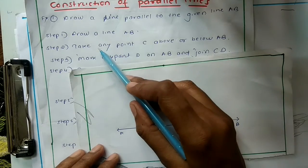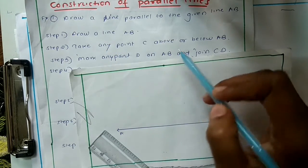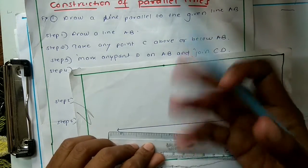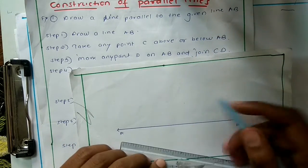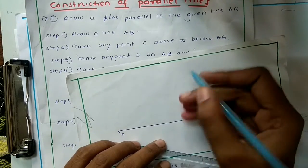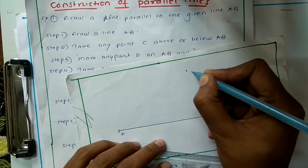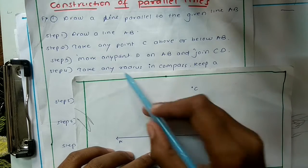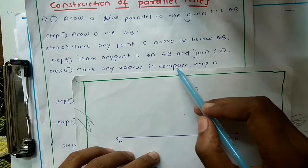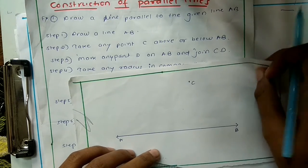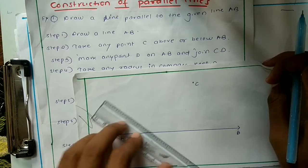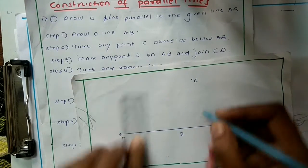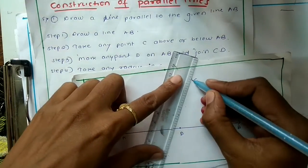The second step is to take any point C above or below AB — it is convenient to take it above AB, so mark point C anywhere. The third step is to mark any point D on AB and join C and D.